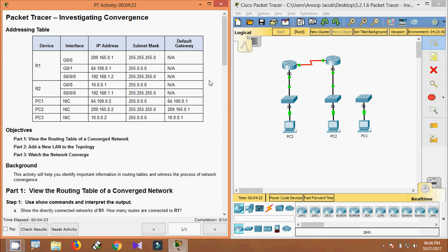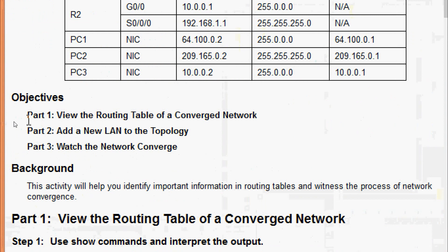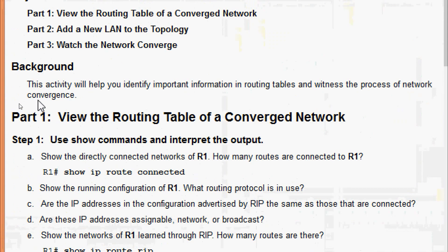Hi friends, welcome. In this video we are going to see the Packet Tracer activity: Investigating Convergence. Here are our objectives: in Part 1, view the routing table of a converged network; in Part 2, add a new LAN to the topology; in Part 3, watch the network converge.